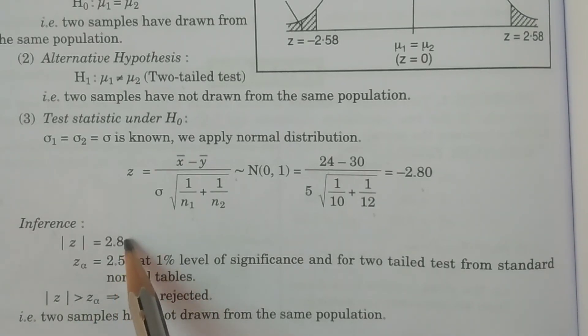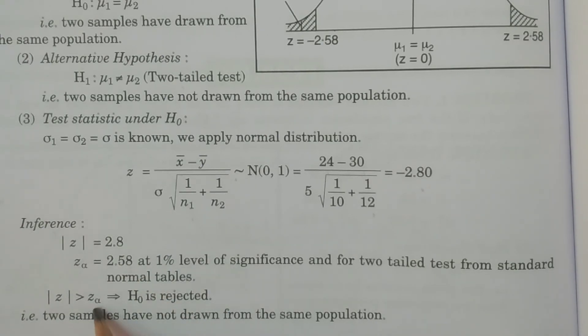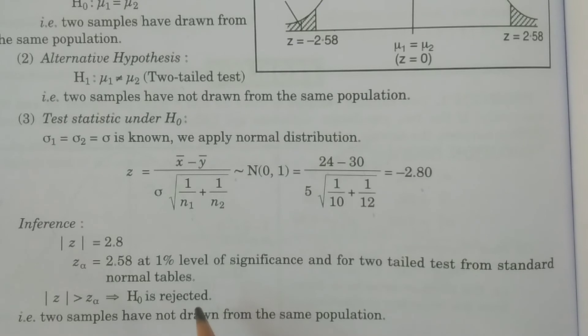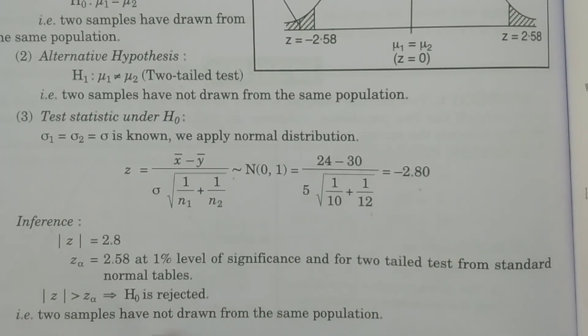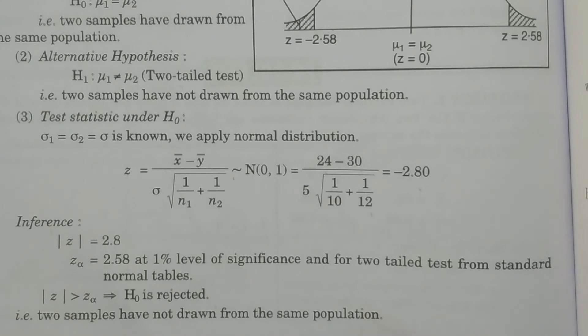And therefore, 2.8 is greater than 2.58. That is, modulus of z is greater than z alpha. That is, H naught is rejected. H naught is rejected means H1 is accepted. That is, two samples have not drawn from the same population. Is it finished? Hope you understand. Thank you.